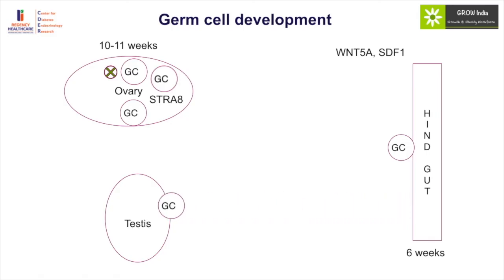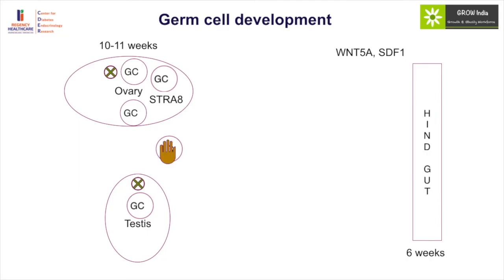The germ cells which migrate to the testis do not have the retinoic acid environment of STRA8, and therefore they have a meiotic arrest — they don't undergo the first meiosis at this point. Any other germ cell in the body is actually destroyed, but rarely, germ cells may skip this destruction and can subsequently produce germ cell tumors, typically in the mediastinum, liver, and most commonly in CNS areas, such as germinomas, which can cause precocious puberty in boys.